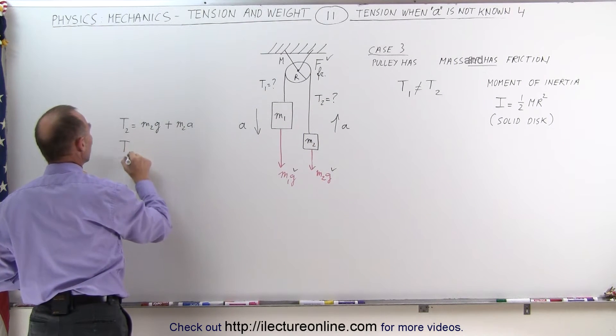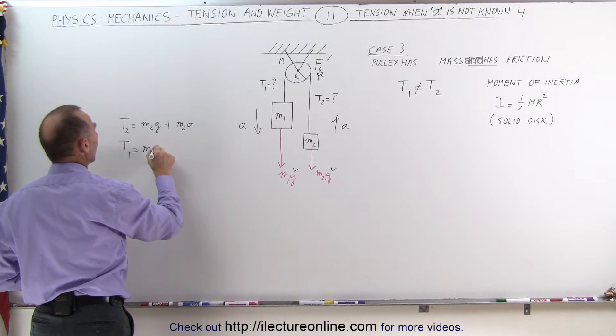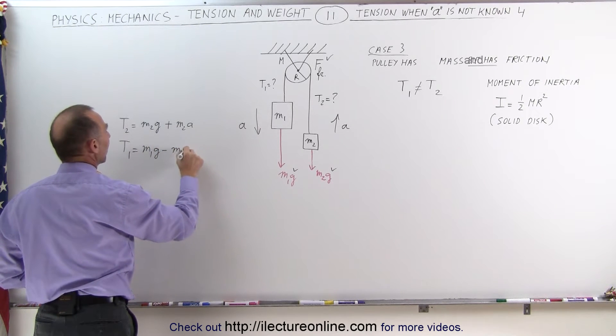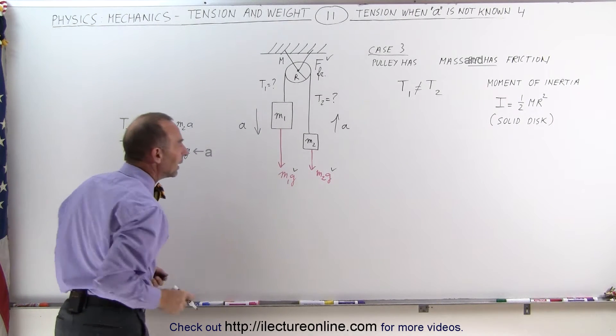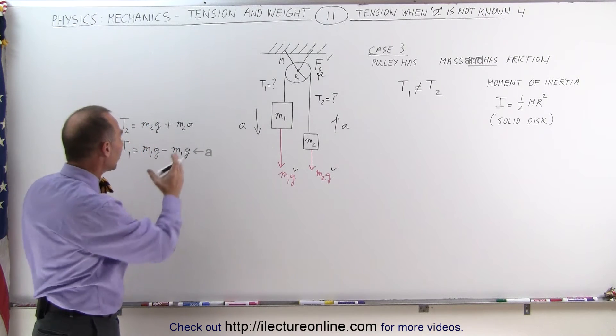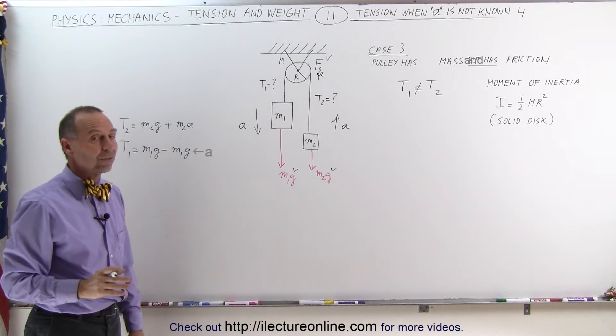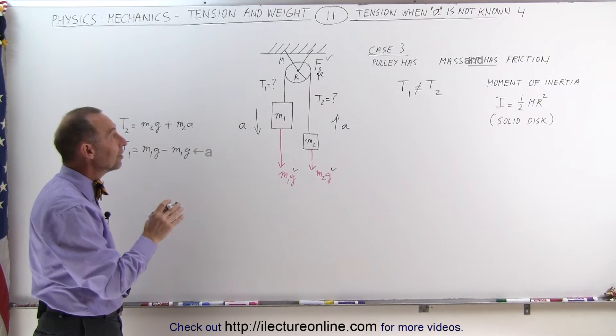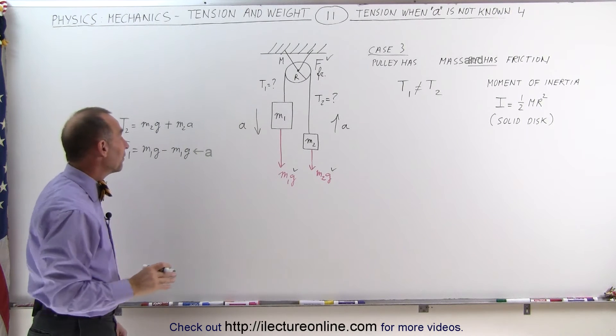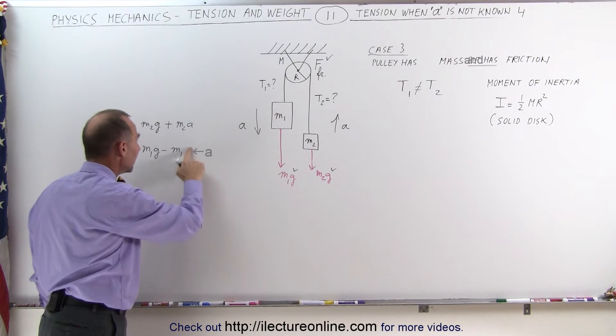We can also find T1 by saying it's equal to M1G minus the force required to accelerate M1 in a downward direction. So that will be the same for all three cases. But now we need to find the acceleration due to gravity. It all comes down to, and this should be an A, not G.